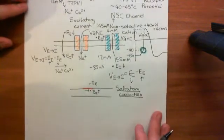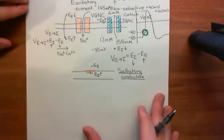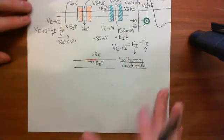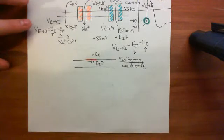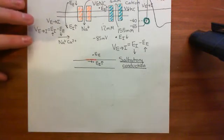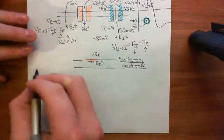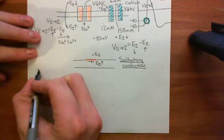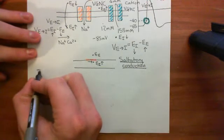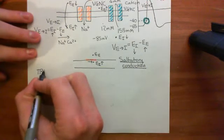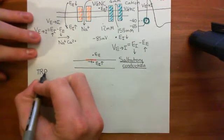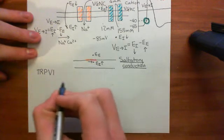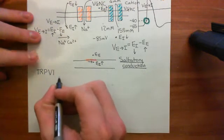Now what we want to do is study these nociceptors — the receptors for the noxious stimuli — in more detail. So let's go back to TRPV1. TRPV1 is an ion channel which responds to temperature.